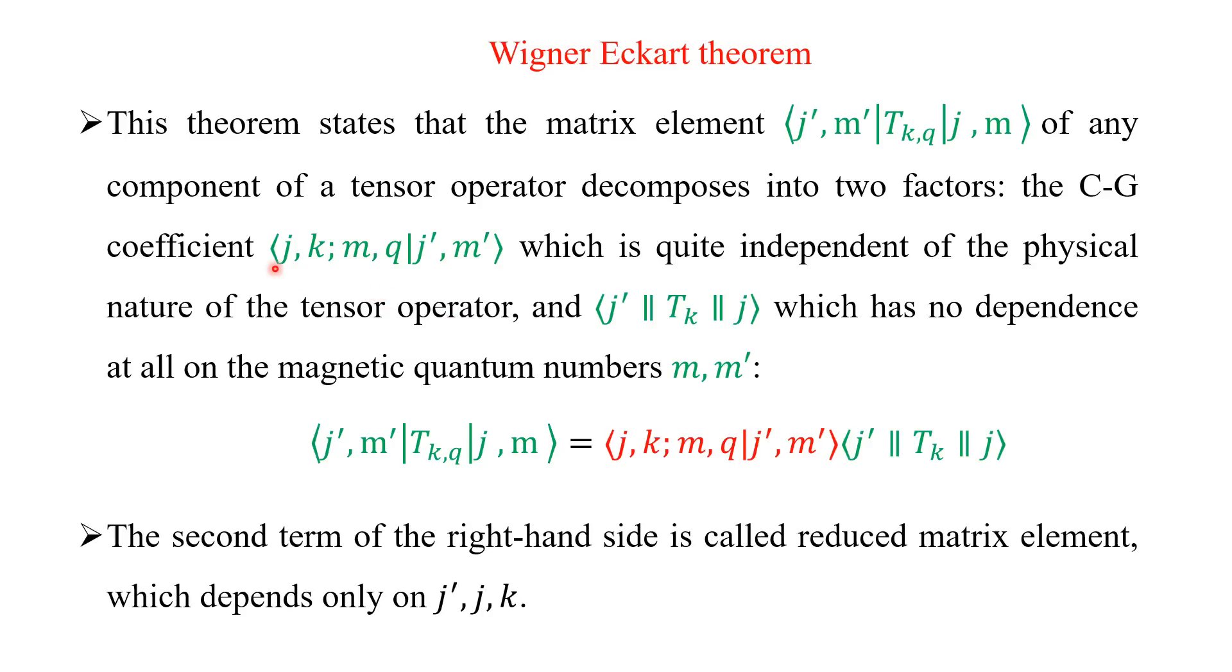It depends on the total angular momentum and the magnetic angular momentum. And the other product, that is ⟨j'||T_k||j⟩, see here we have double line T_k, this double line indicates the reduced matrix element. This is the reduced matrix element, which has no dependence at all on magnetic numbers M and M'.